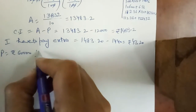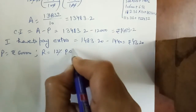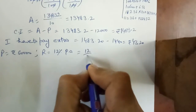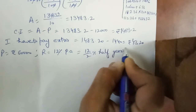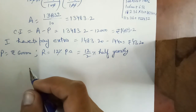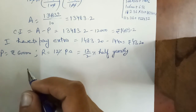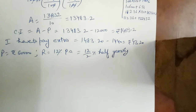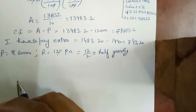Principal = ₹60,000. Rate = 12% per annum, but since it is compounded half-yearly, the rate becomes 12 ÷ 2 = 6% per half-year. For the 6-month part, time is 1 half-year so T = 1. For the 1-year part, time is 2 half-years so T = 2. We do not multiply time by 2 for the 6-month case since it is already one half-year.